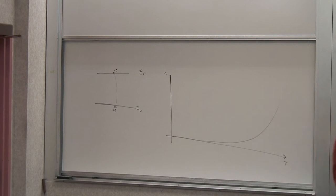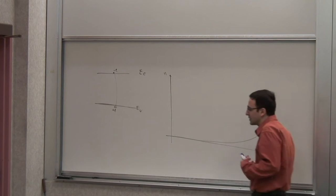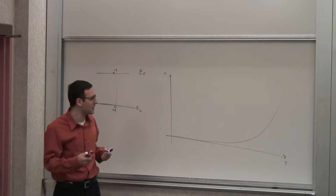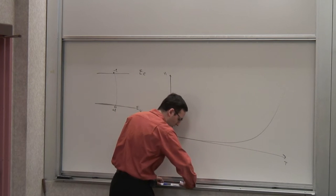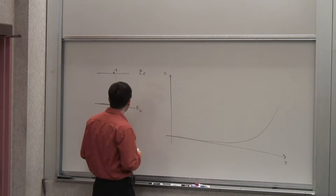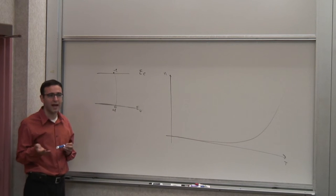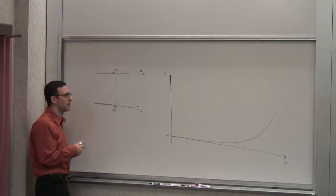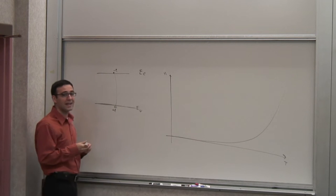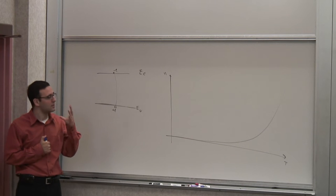We said we have to manipulate this somehow and be able to control the number of electrons and holes independently if we could, so we can have a situation where they're not exactly equal at all times. We saw that if you introduce column five atoms into the semiconductor, the number of these atoms is quite small — you have to keep in mind, if you're talking about 10 to the 15, 10 to the 16.